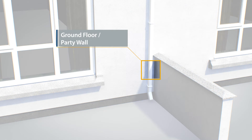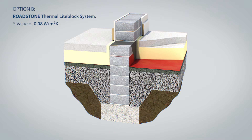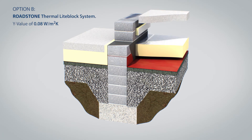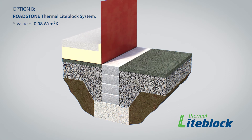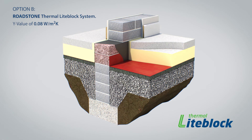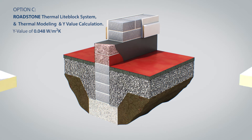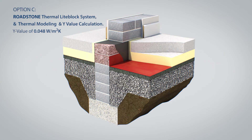Detail 3 is the junction of the ground floor and party wall. Option A shows a standard concrete block construction having a thermal bridge giving a Y-Value of 0.15. Option B shows Roadstone thermal light block being used — 100mm thermal light blocks laid on the flat — allowing the builder to take a Y-Value of 0.08. In Option C, the builder avails of Roadstone's Y-Value calculation service to get a Y-Value of 0.048, thereby allowing a reduction in the thickness of insulation in the floor while still maintaining the A2 BER rating.